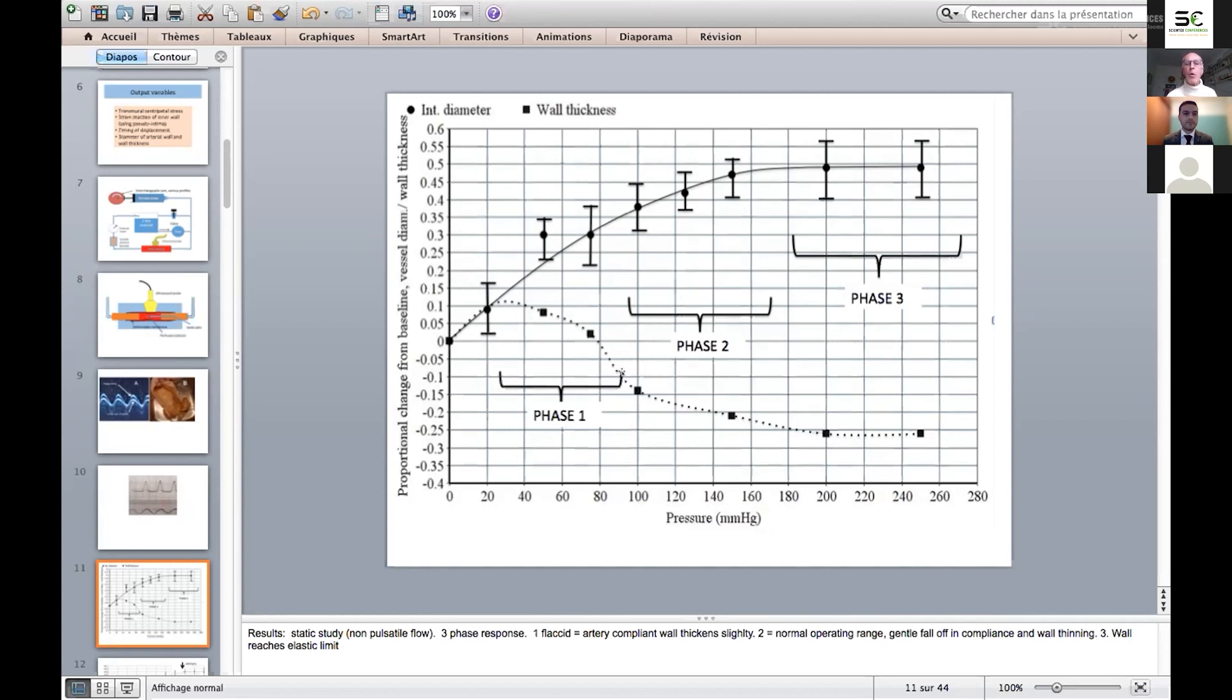Throughout the normal operating range of pressure, we have a slightly reducing linear response as the Young's modulus, the stiffness of the arterial wall, reduces at the upper end of the normal range. That is associated with very linear wall thinning. Then we reach the maximum compliance of the artery when further dilatation is limited by the outer adventitia, which is made of connective tissue collagen. At this point, the wall reaches its maximum thinness.